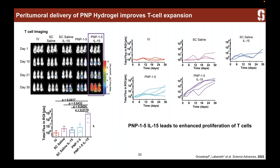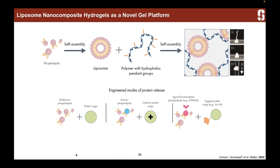I'm going to highlight one other project from my PhD, where we took a spin on the PNP hydrogel. Here, instead of core-shell nanoparticles, we used liposomes. We mixed these with our HPMC-C12 polymer — with those hydrophobic C12 groups — and when we mixed these two materials, we again saw the formation of a robust gel. We chose liposomes because they're highly modular: you can just order them without needing to do the polymerization we did with core-shell nanoparticles.